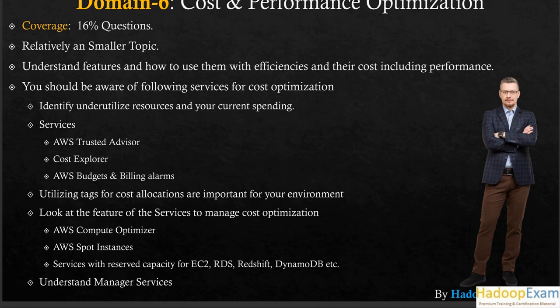To identify underutilized resources and manage your current spending, key services include AWS Trusted Advisor, Cost Explorer, AWS Budgets, and Billing. You should also utilize tags as much as possible for cost allocation — for example, grouping billing by department so you can track where your costs are going.